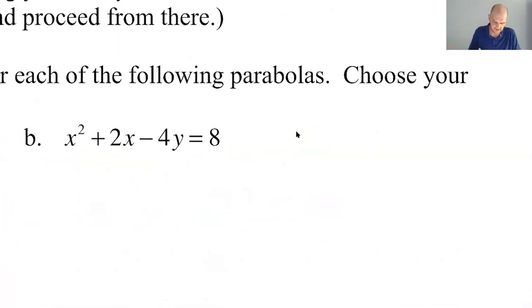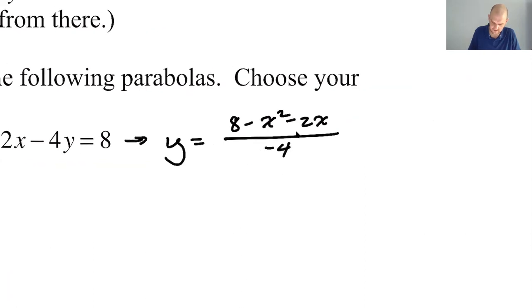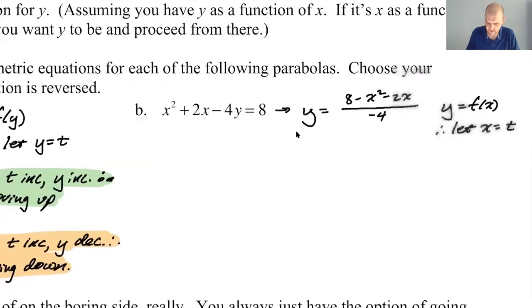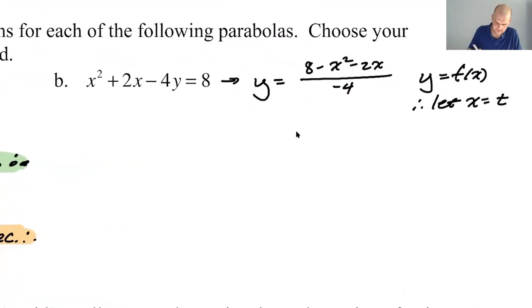Is Y a function of X or is X a function of Y? Well, which one's easier to solve for? I'm going to say that Y is easier to solve for. It's 8 minus X squared minus 2X divided by negative 4. So when you look at it, you can see that Y is a function of X. So it makes sense to let X equal T in the easiest parameterization. So I'm going to do that. Parameter one, I'm going to say X is T.